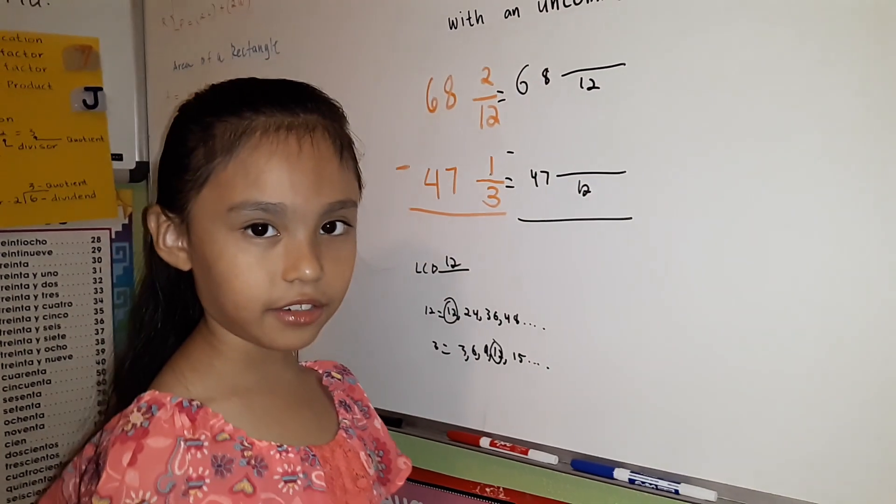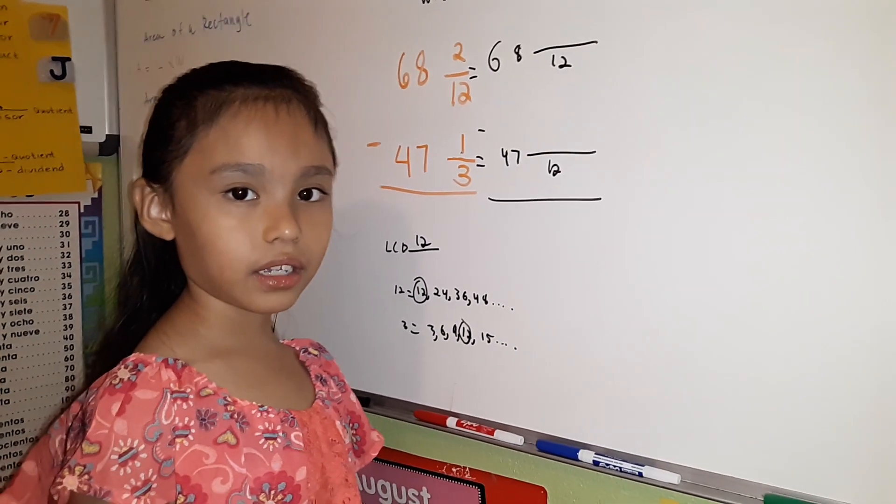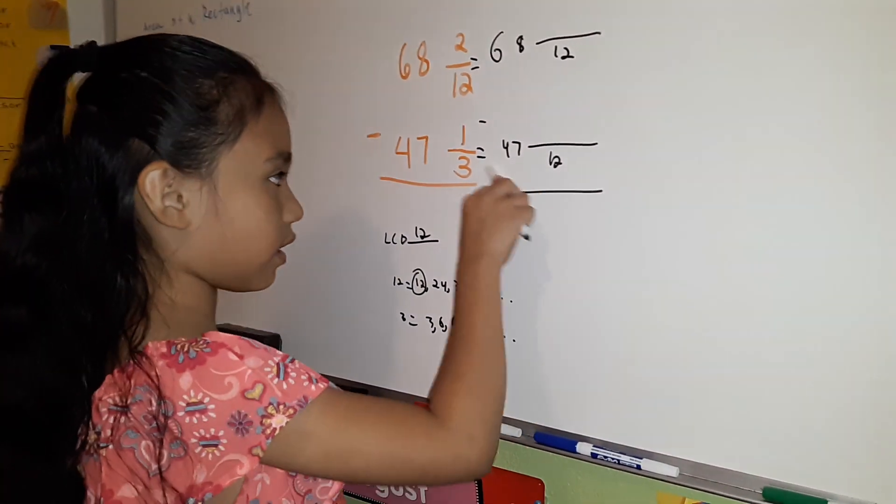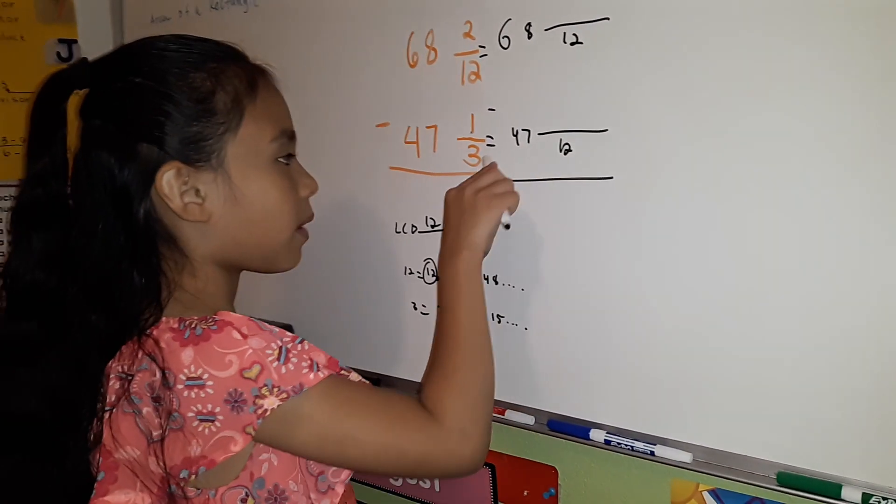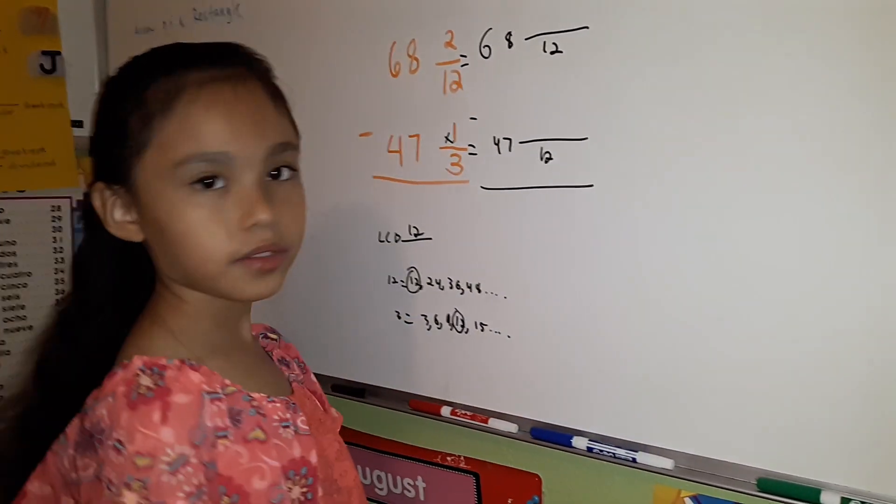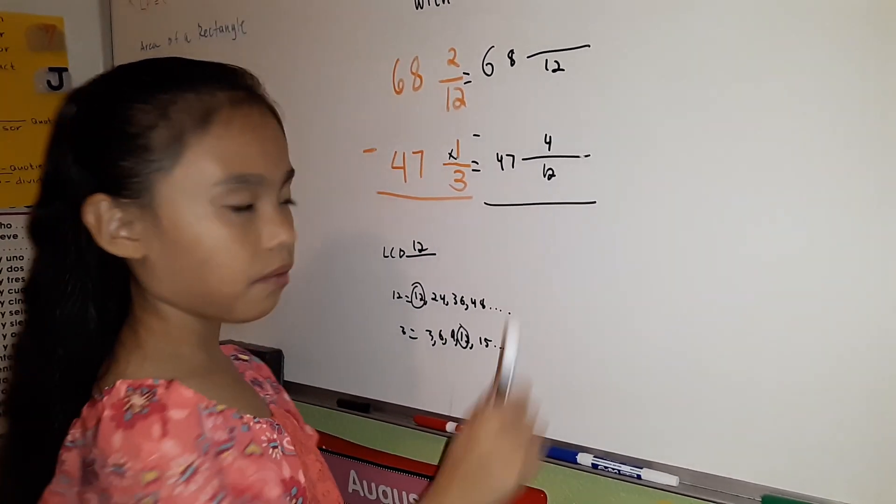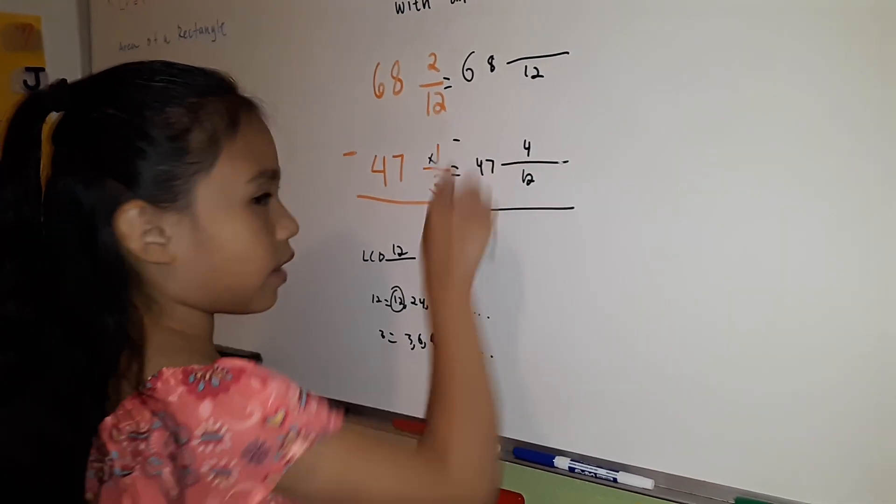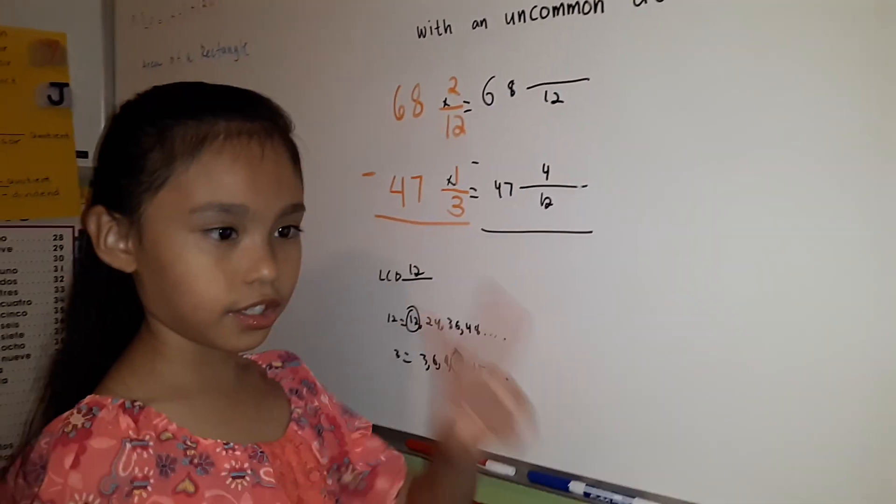Since our denominator is the same, we're going to define the equivalent fractions. To define the equivalent fractions, we're going to divide the denominator and multiply it from the numerator. 12 divided by 3 equals 4. 4 times 1 equals 4. The same thing with 12. 12 divided by 12 equals 1. 1 times 2 equals 2.